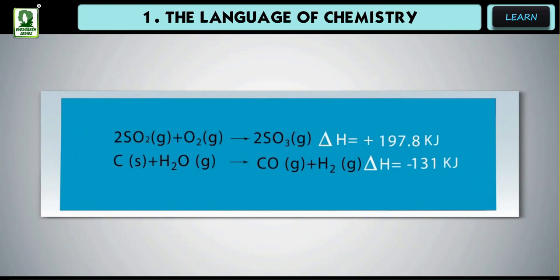Heat changes during a reaction are indicated by writing plus Q kilojoules or minus Q kilojoules along.